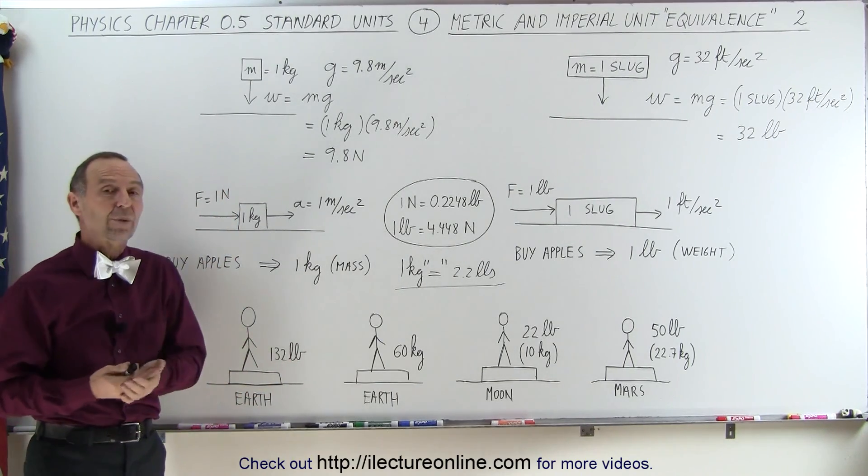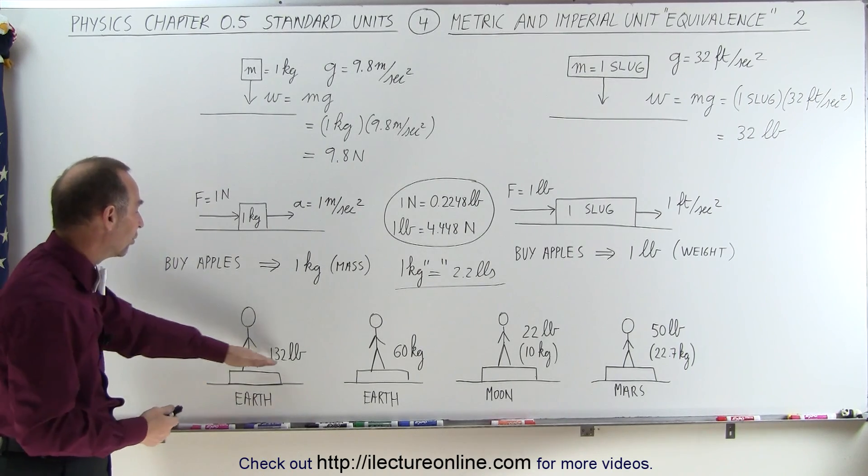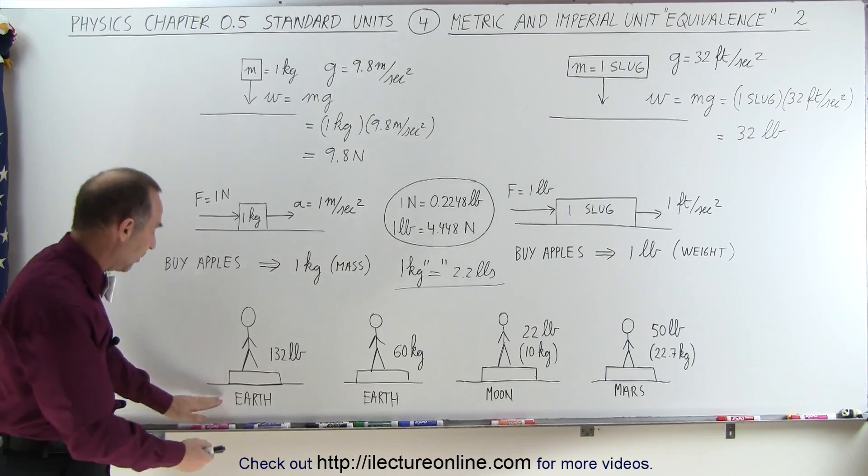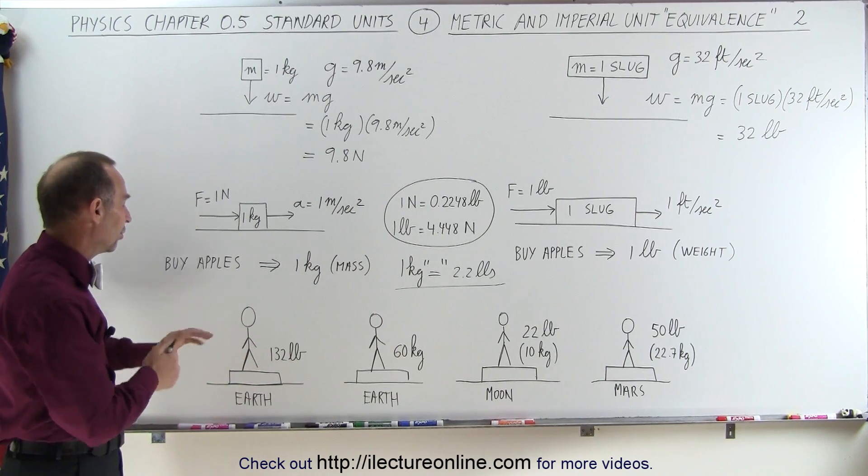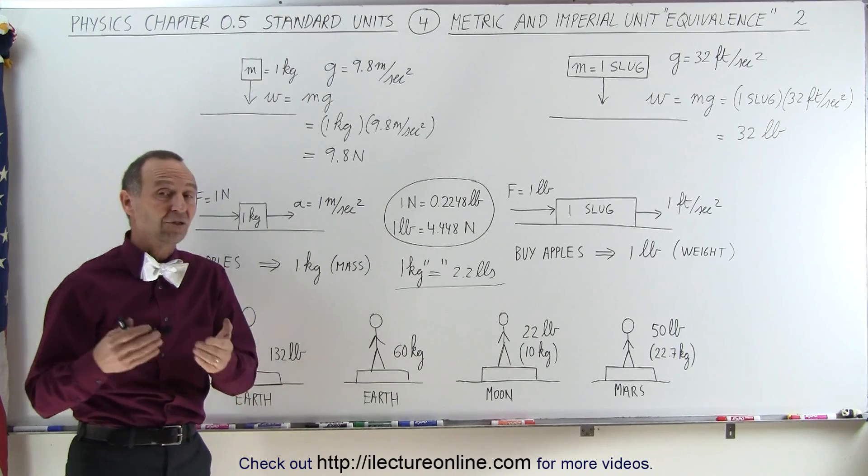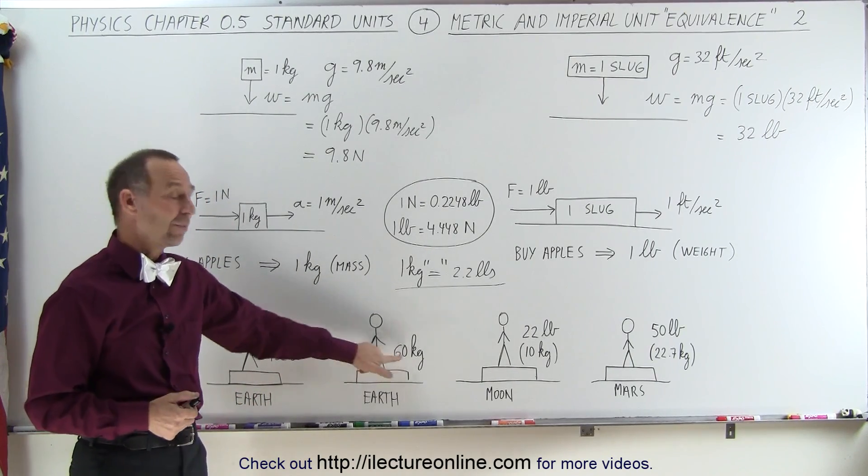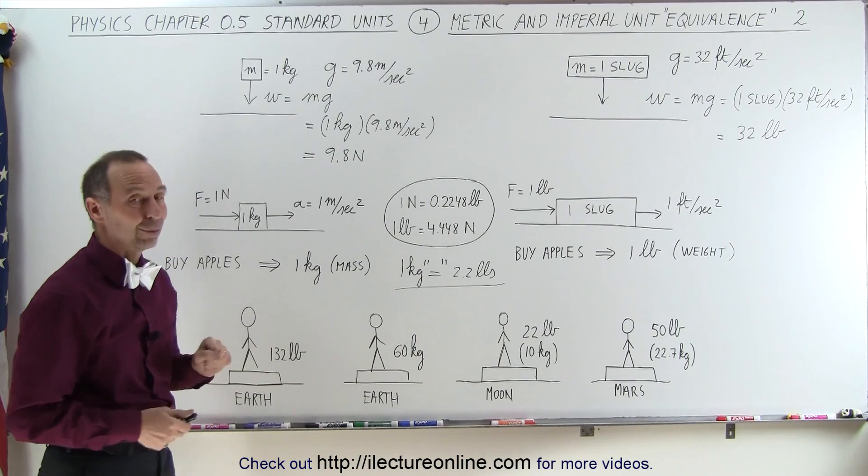Now, what's also interesting is when you weigh yourself on a scale on the earth. Let's say there's a person that weighs 132 pounds on the earth, they'll measure themselves, and there it is, 132 pounds. But if that same person steps on a different scale that measures things in mass, you'll find that you'll have a mass of 60 kilograms and a weight of 132 pounds.